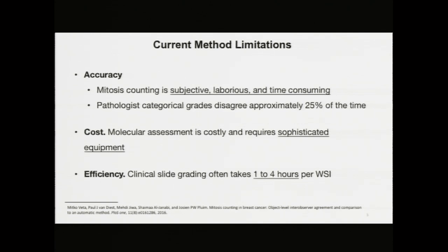In particular, mitoses counting is known to be subjective, laborious, and time-consuming, and pathologists' categorical grades tend to disagree approximately 25% of the time, which is unacceptable for clinical practice. Moreover, molecular assessment is both costly and requires extensive domain knowledge regarding conducting RNA-seq tests, and is simply not feasible in many hospitals currently, so most patients have to stick with categorical assessment of tumor slides. Finally, most methods are inefficient, with clinical slide grading taking over one to four hours for each whole slide image, so there are numerous areas for improvement.